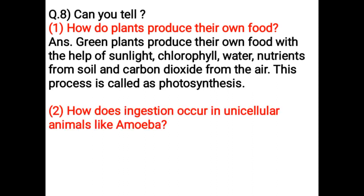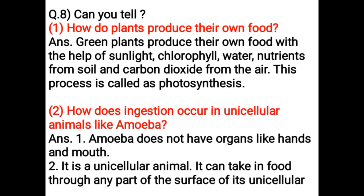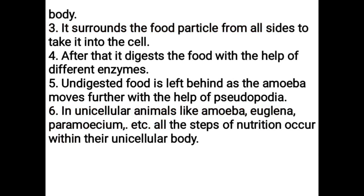How does ingestion occur in unicellular animals like Amoeba? Amoeba does not have organs like hands and mouth. It is a unicellular animal. It can take in food through any part of the surface of its unicellular body. It surrounds the food particle from all sides to take it into the cell. After that, it digests the food with the help of different enzymes. Undigested food is left behind as the amoeba moves further with the help of pseudopodia. In unicellular animals like Amoeba, Euglena, and Paramecium, all the steps of nutrition occur within their unicellular body.